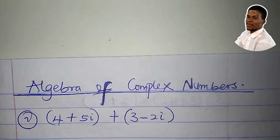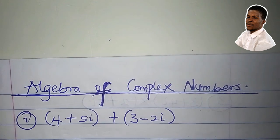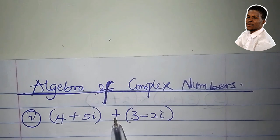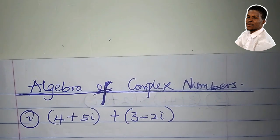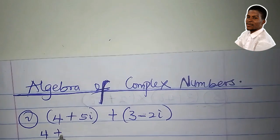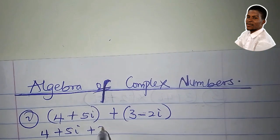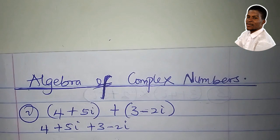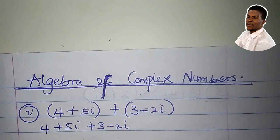Let us start with addition of complex numbers. I want to add these two complex numbers, 4 plus 5i plus 3 minus 2i. I can write them without brackets: 4 plus 5i plus 3 minus 2i. So the idea here is to add like terms.